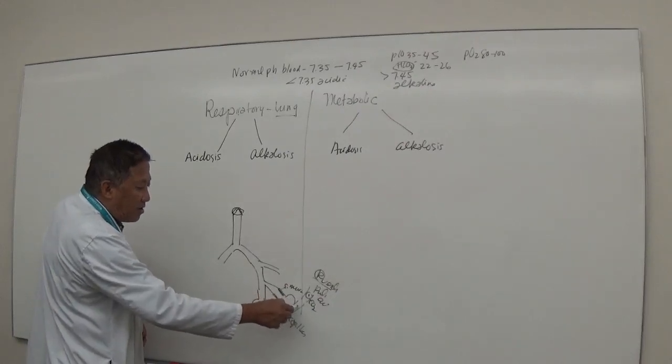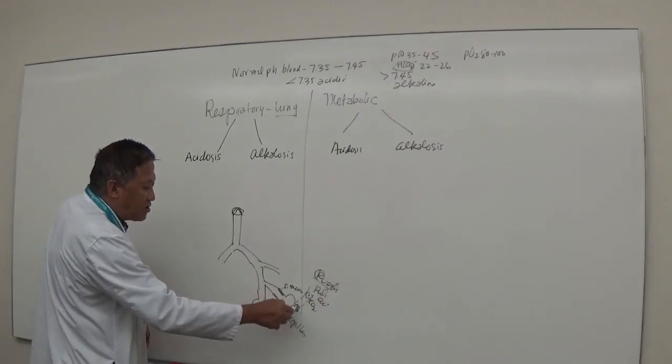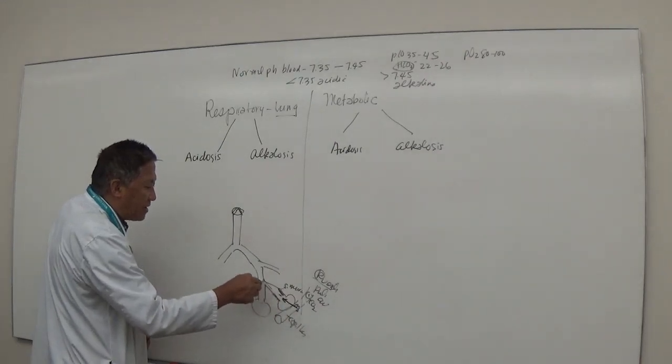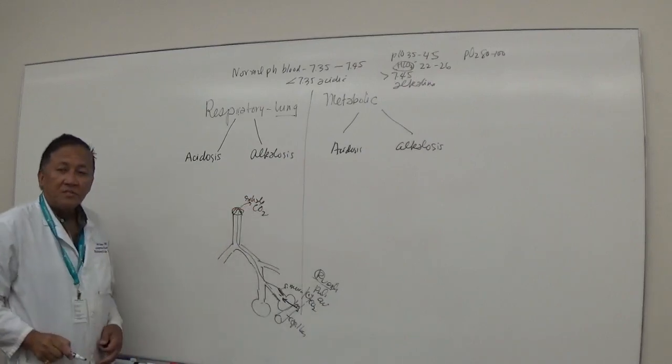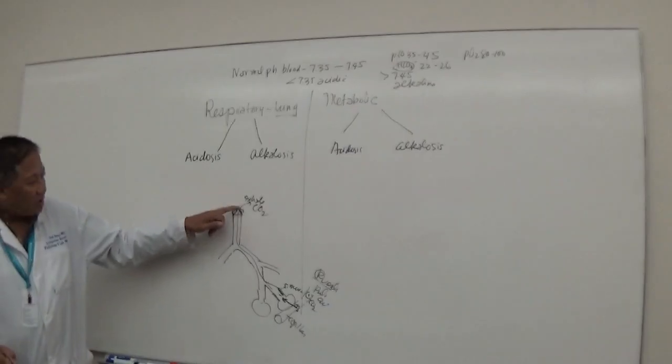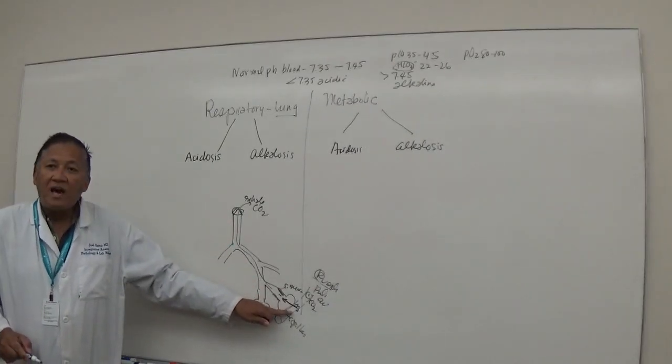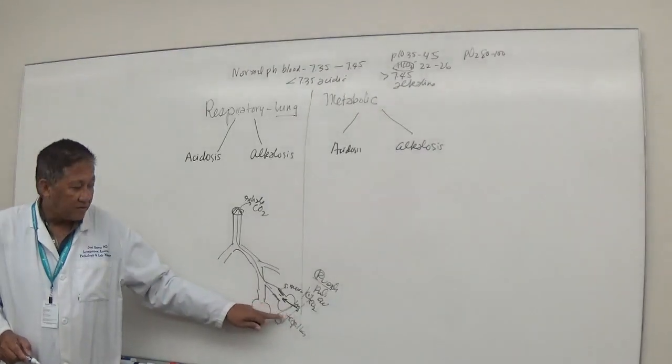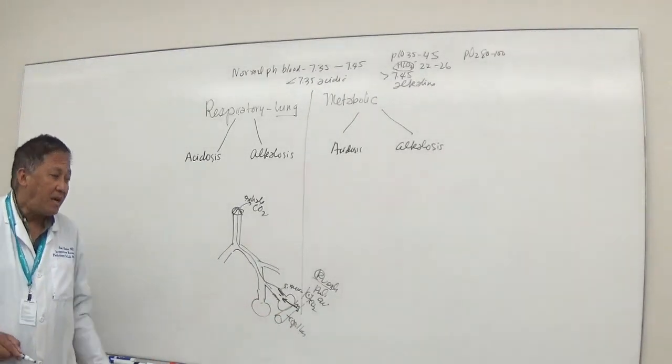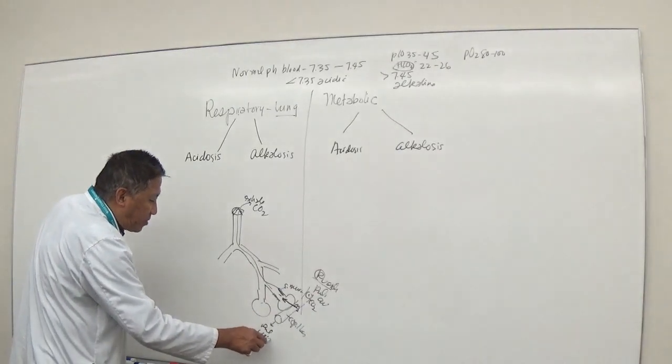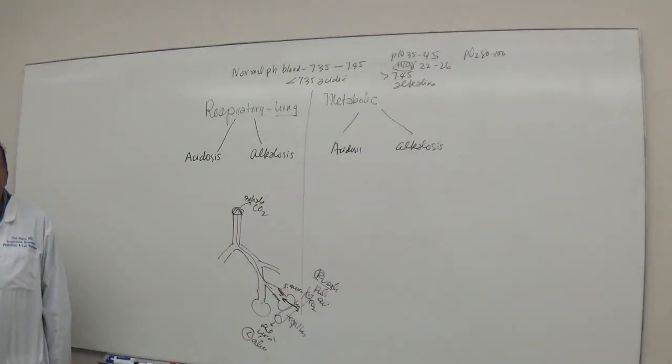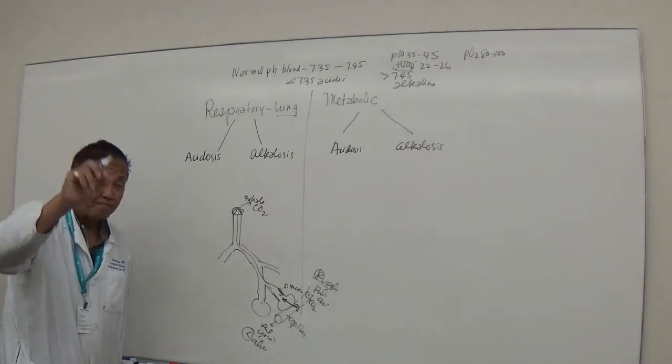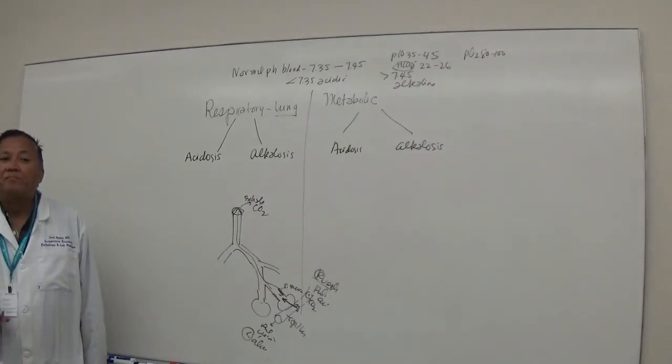Then you have the air sac. You have millions of these in your lung, you have two lungs, one on the right, one on the left. It has a pulmonary capillary, a small blood vessel. The pulmonary capillary comes from the pulmonary artery, and this carries the blood coming from the right side of the heart, particularly the right ventricle.